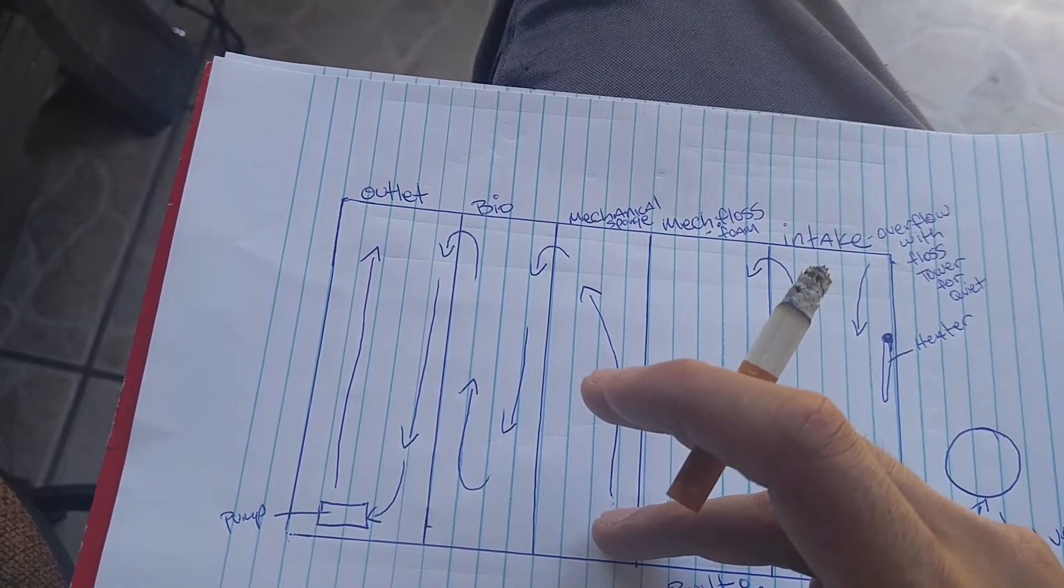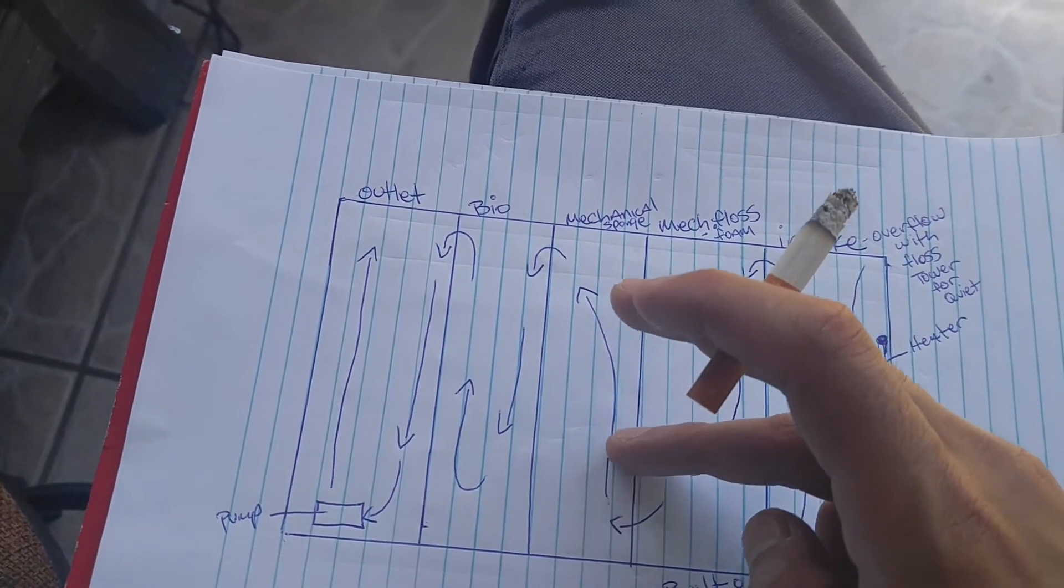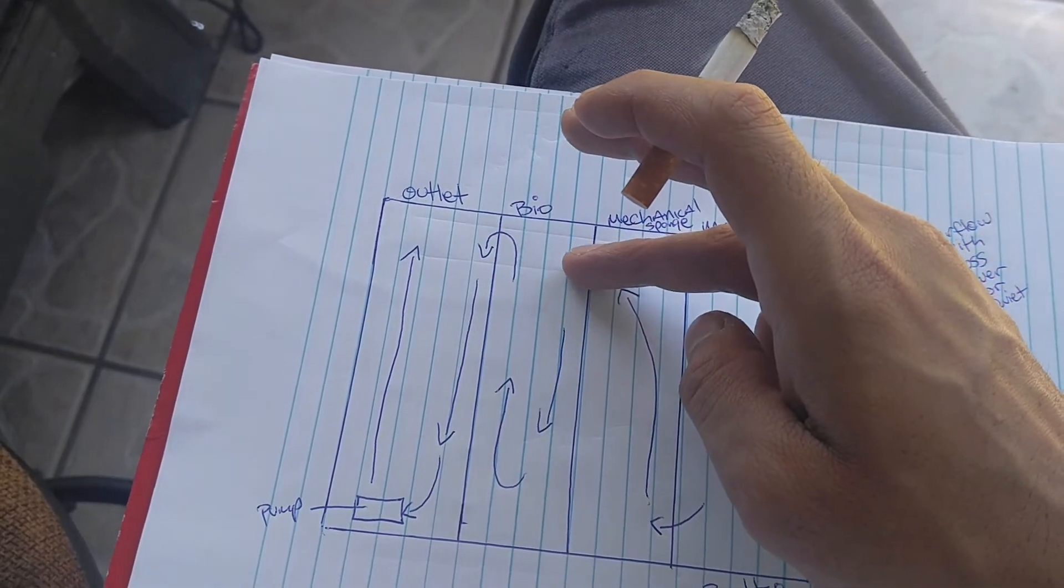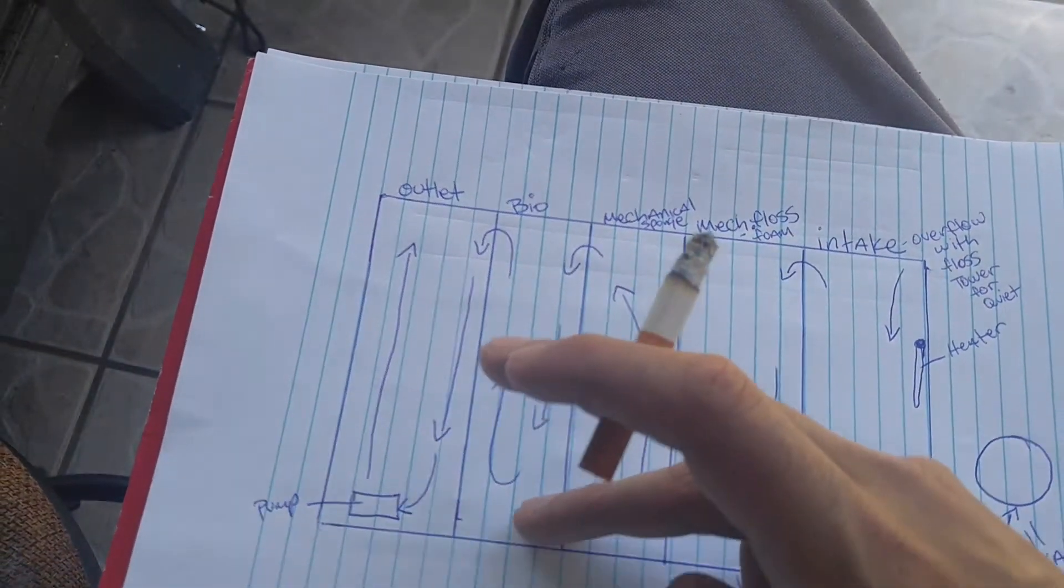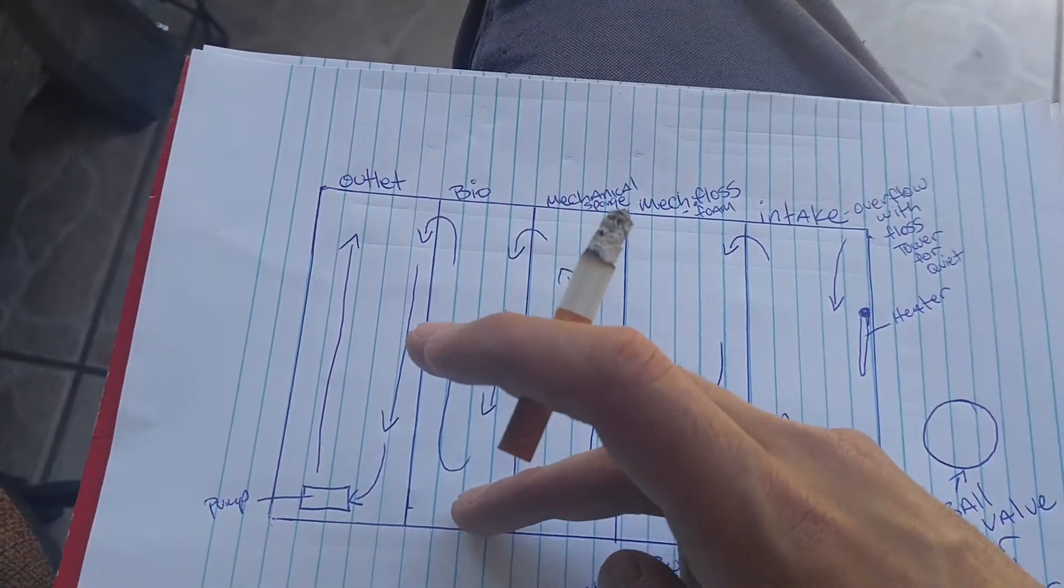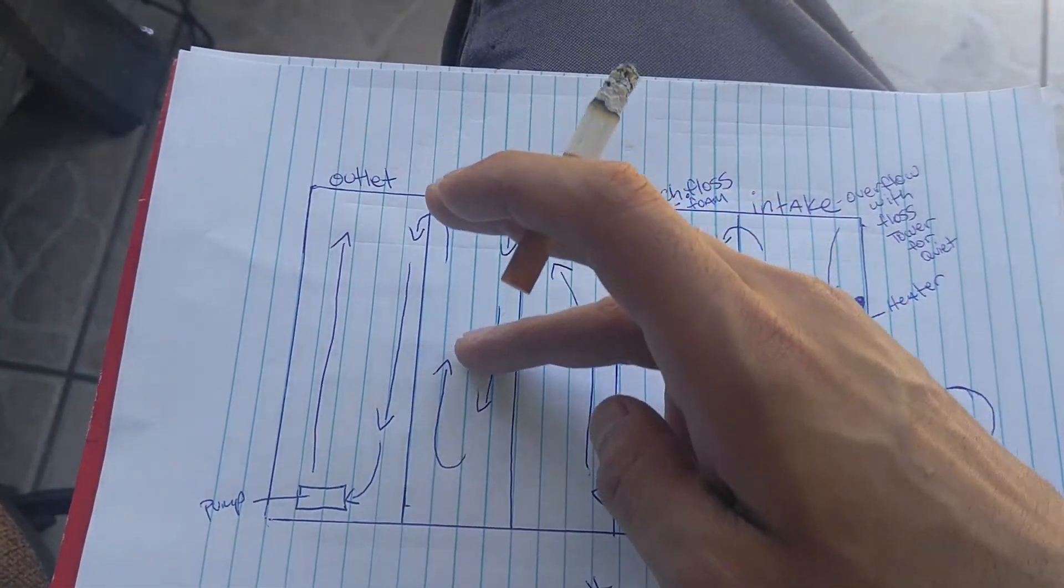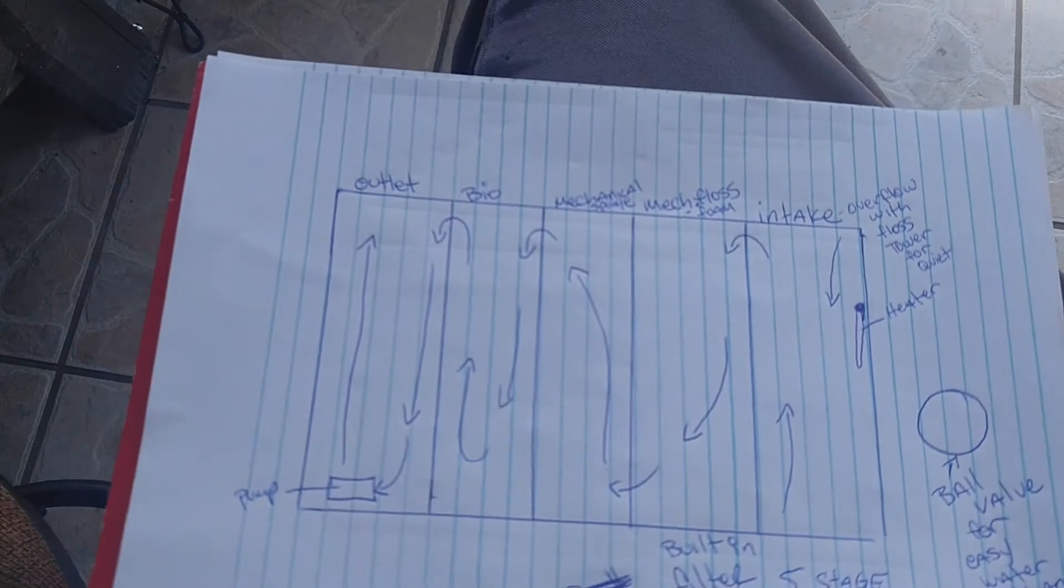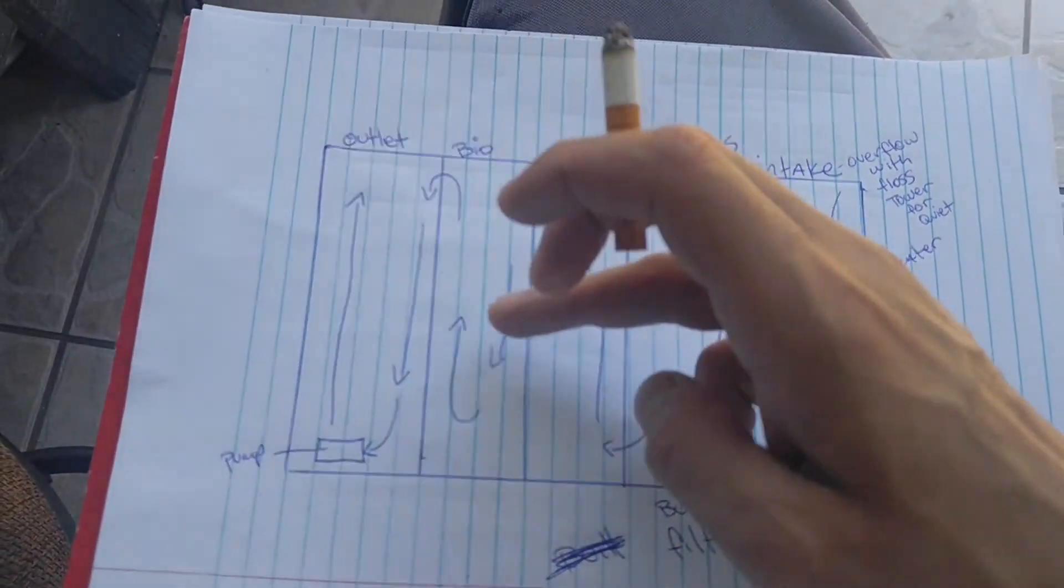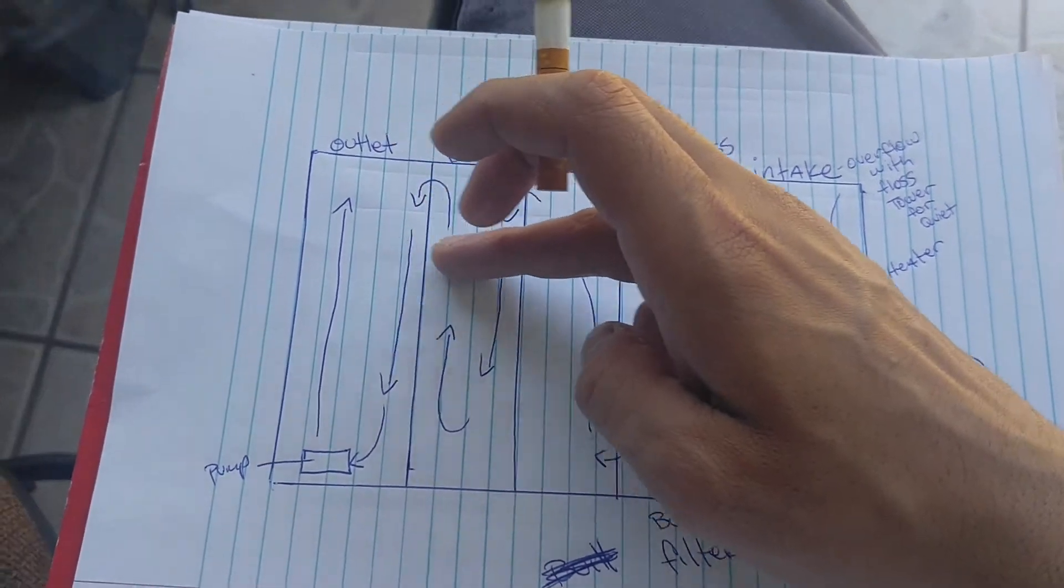do the mechanical sponges. Then it's gonna go up, come over into the bio. I'm gonna have lots of different bios in there - probably some lava rock, maybe some bio home. I don't know if I'm gonna invest into that, but this whole thing is gonna be full of bio